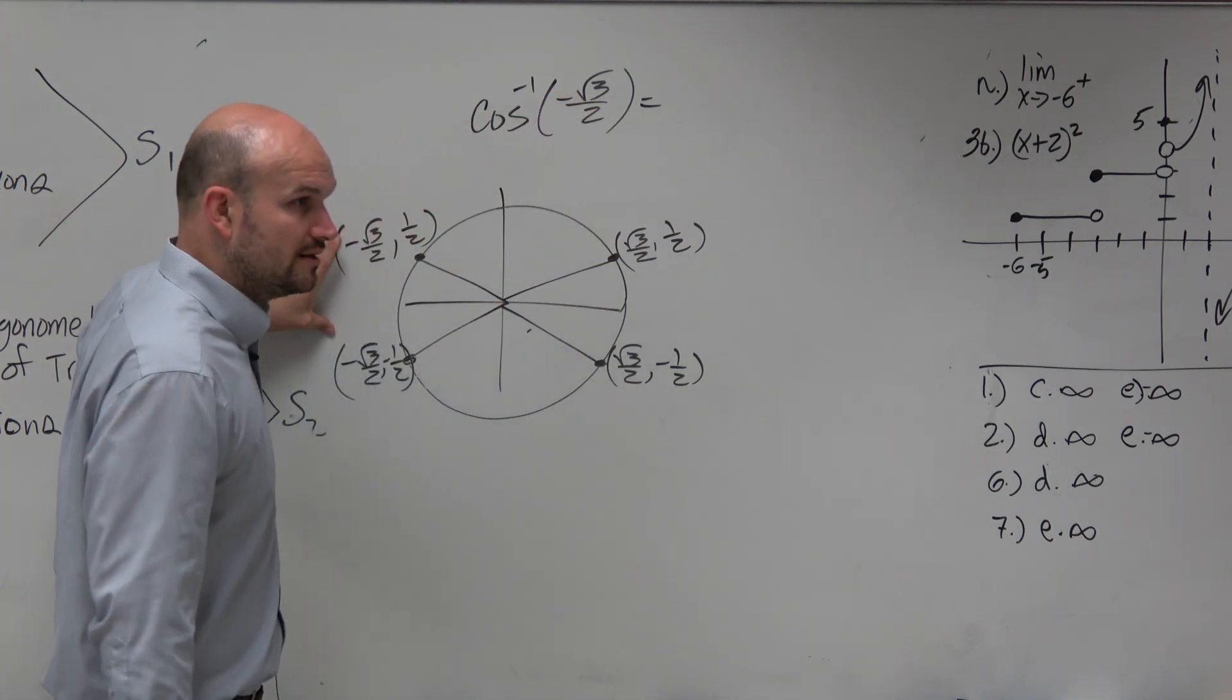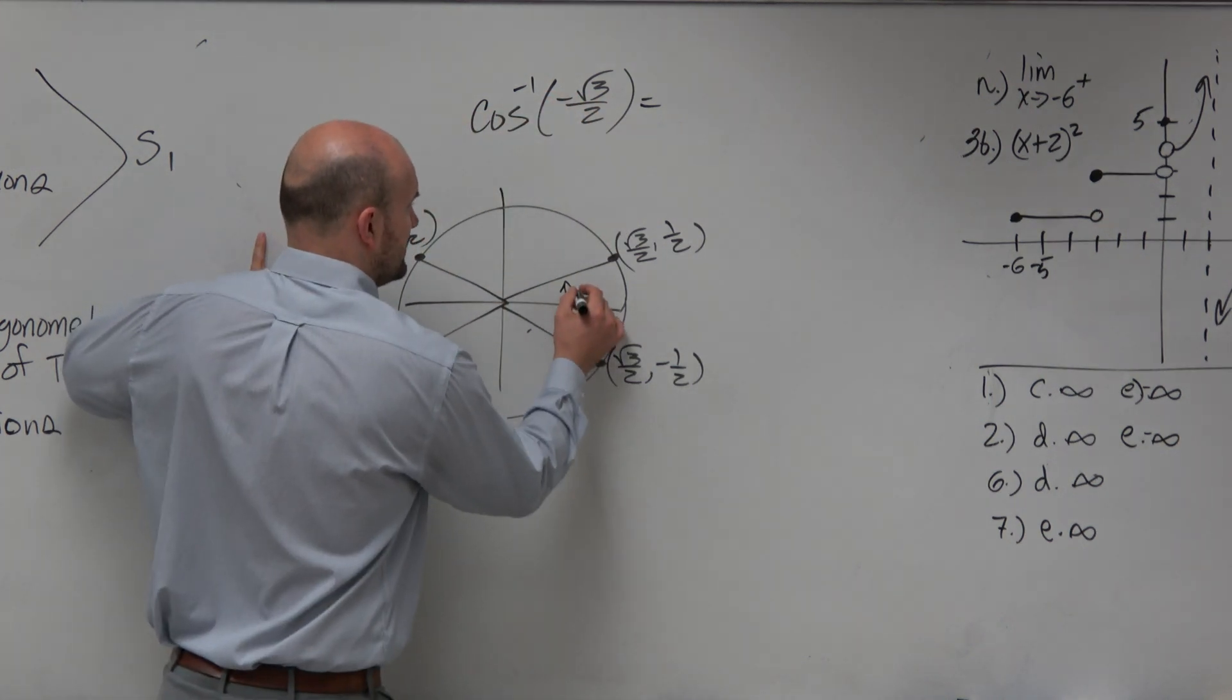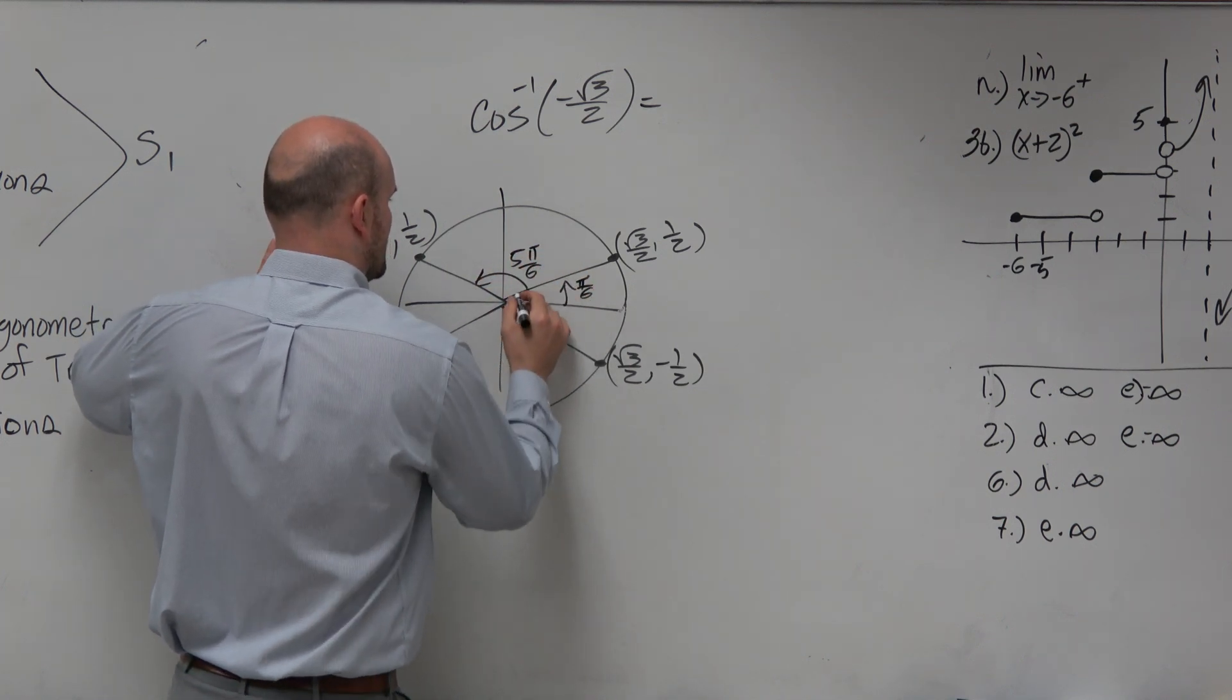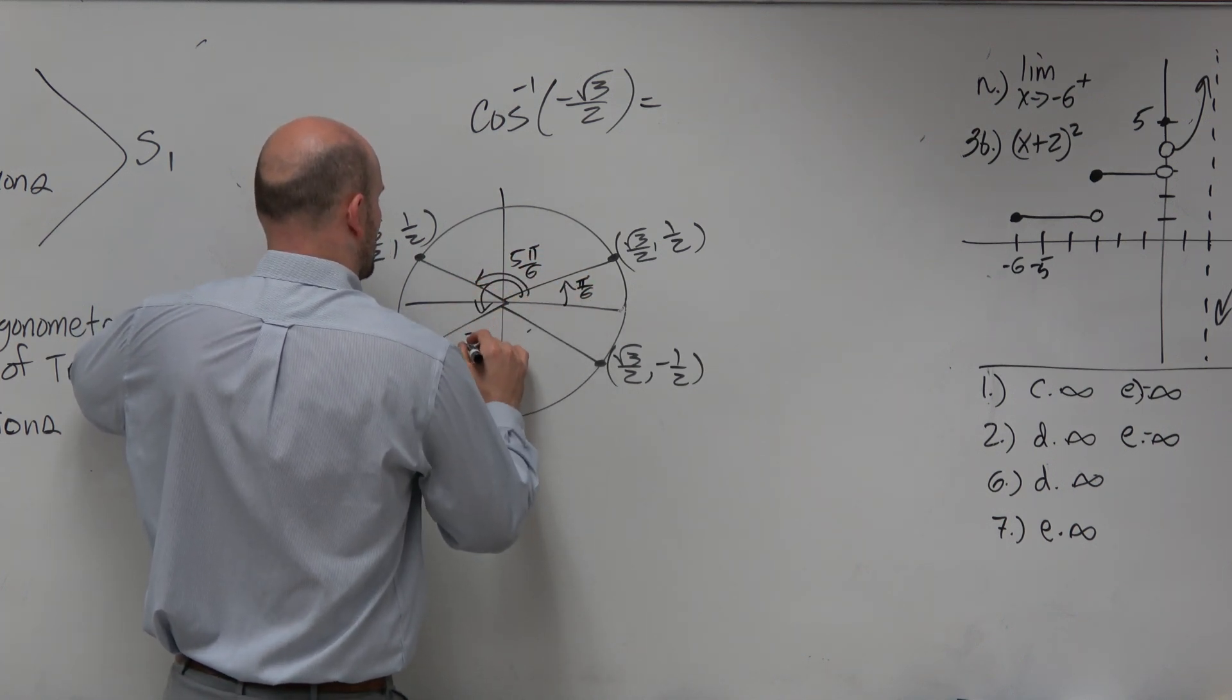So there's two points over here. Now we know this point, hopefully we know this, is pi over 6. So therefore, this point is 5 pi over 6, and this point would be 7 pi over 6.